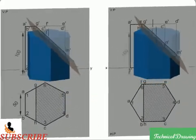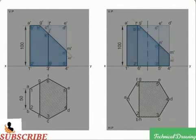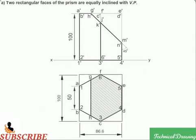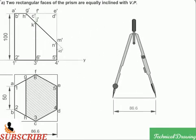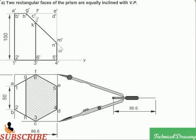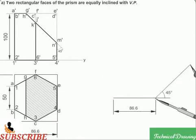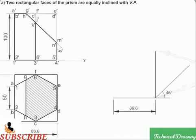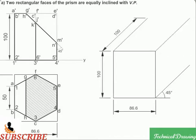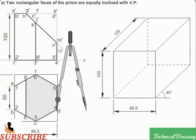Draw the front view and top view of the hexagonal prism as shown in the figures. Enclose the top view in a rectangular box. Draw the oblique projection as shown in the figures using the box method as explained in problems 17.14, 17.15, and 17.16.